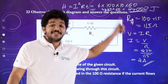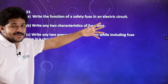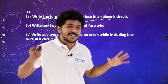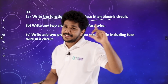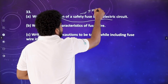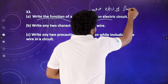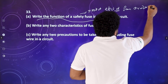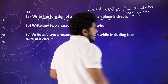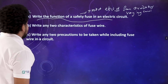That's simple — that video topic is done. The function of safety fuse: safety fuse protects electrical devices from overloading or very high currents. When the current is too high, the fuse melts and protects our electrical devices.